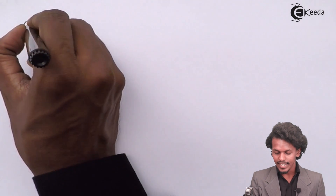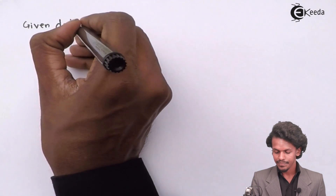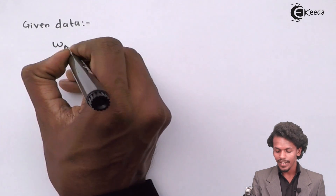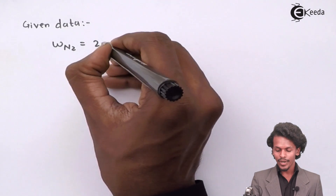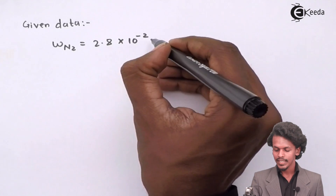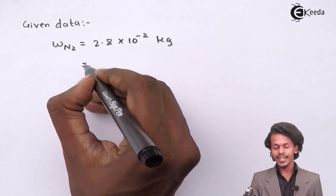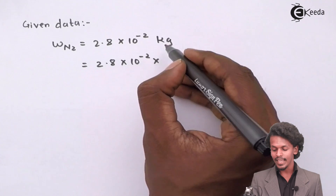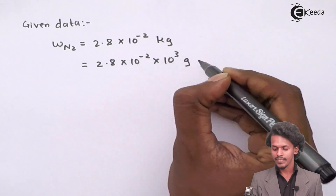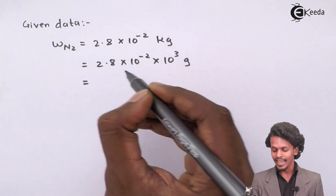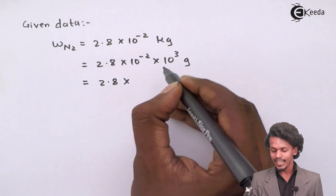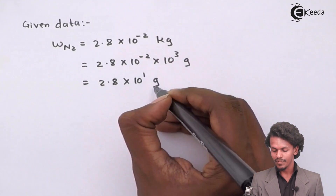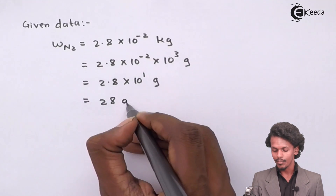First, the given data: the weight of nitrogen, W of N₂, is given as 2.8×10⁻² kg. This can be converted into grams: 2.8×10⁻² × 10³ grams, which gives us 2.8×10¹ grams, that is 28 grams of nitrogen.